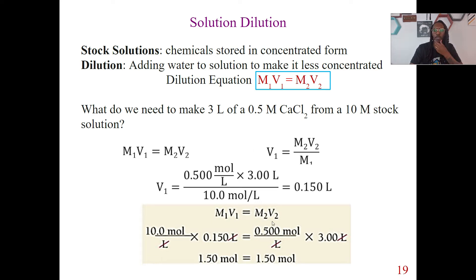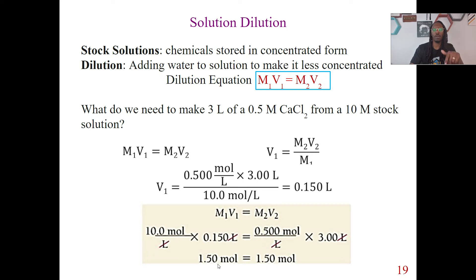Here's a way to double check. We should have the same amount of moles on both sides. So our stock solution at 10 molar times 0.15 liters gives us 1.5 moles. And doing the same thing with 3 liters times 0.5 molar also gives us 1.5 moles. So this is just another way to double check.